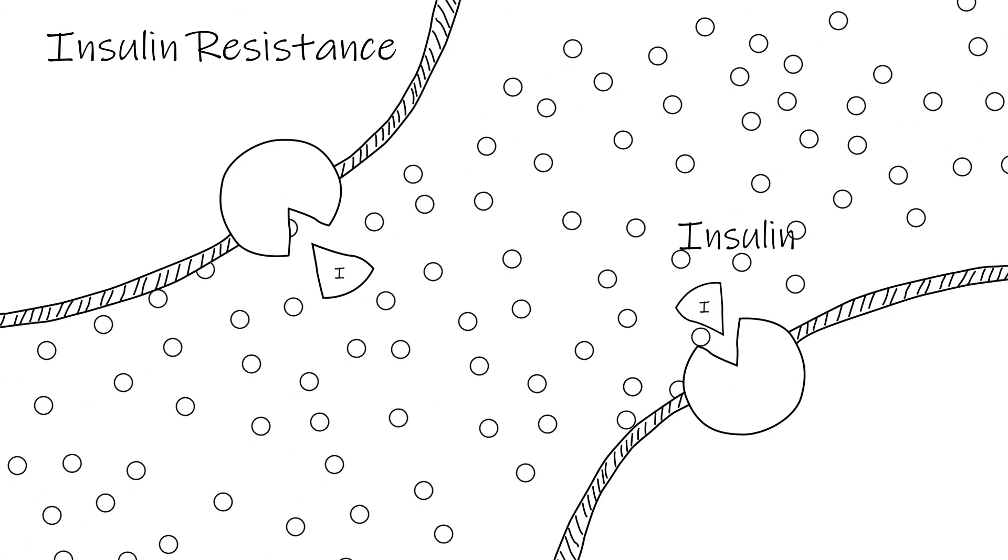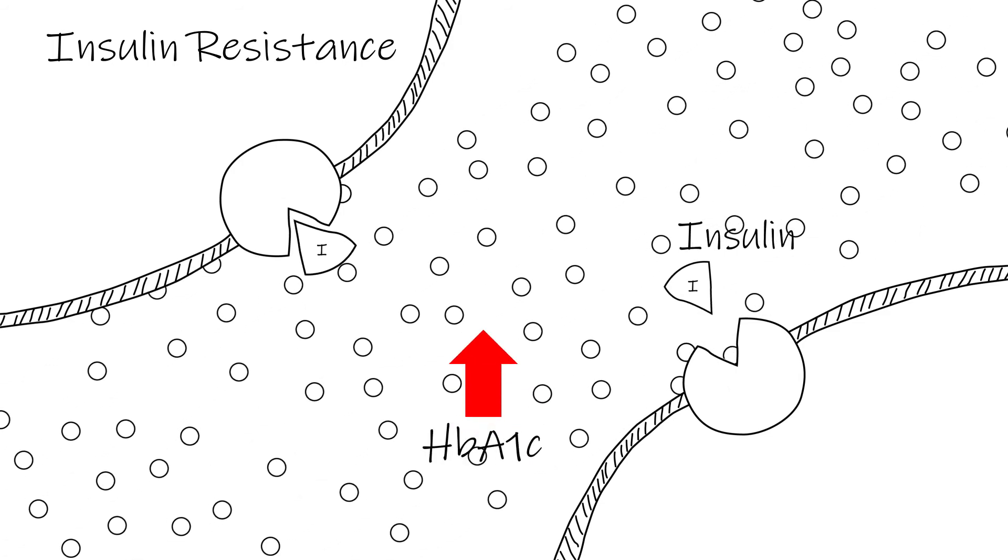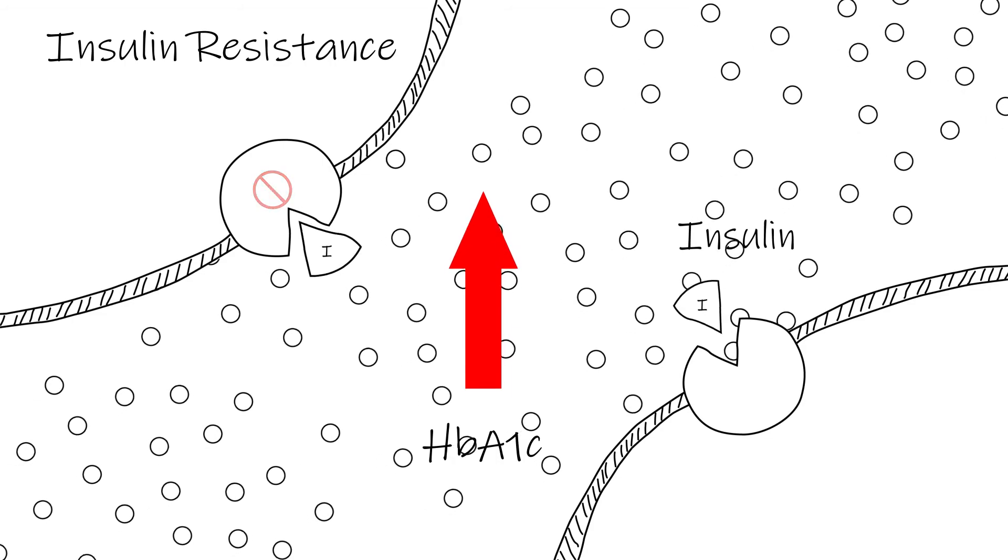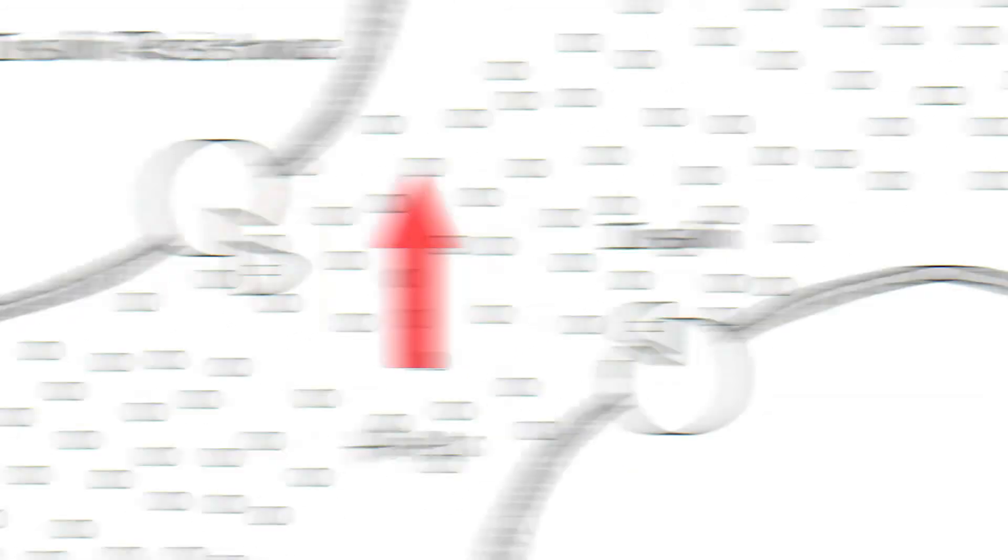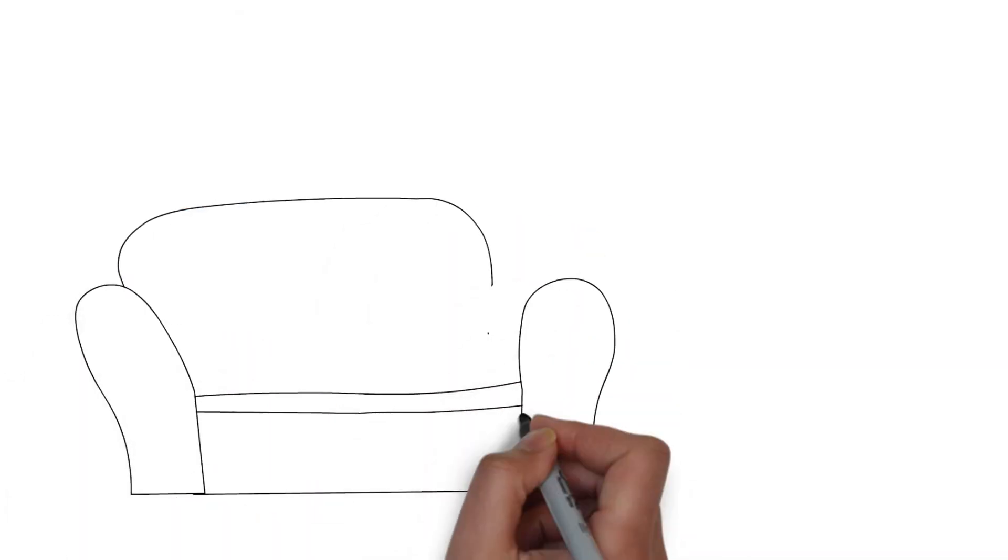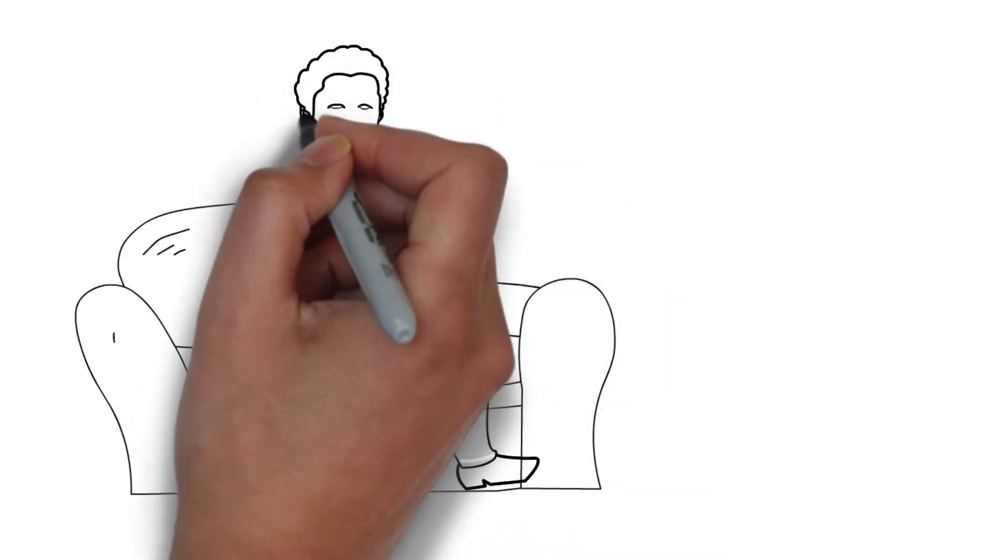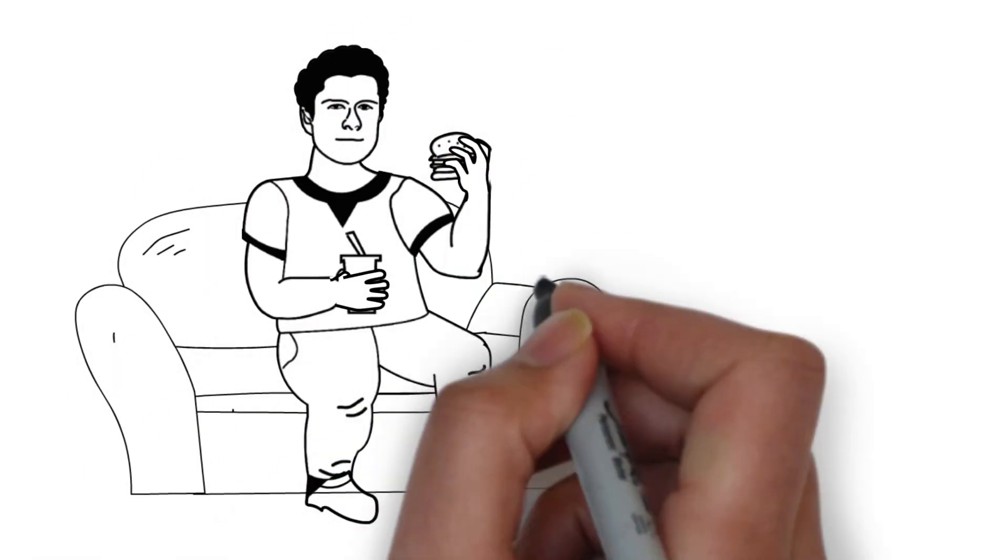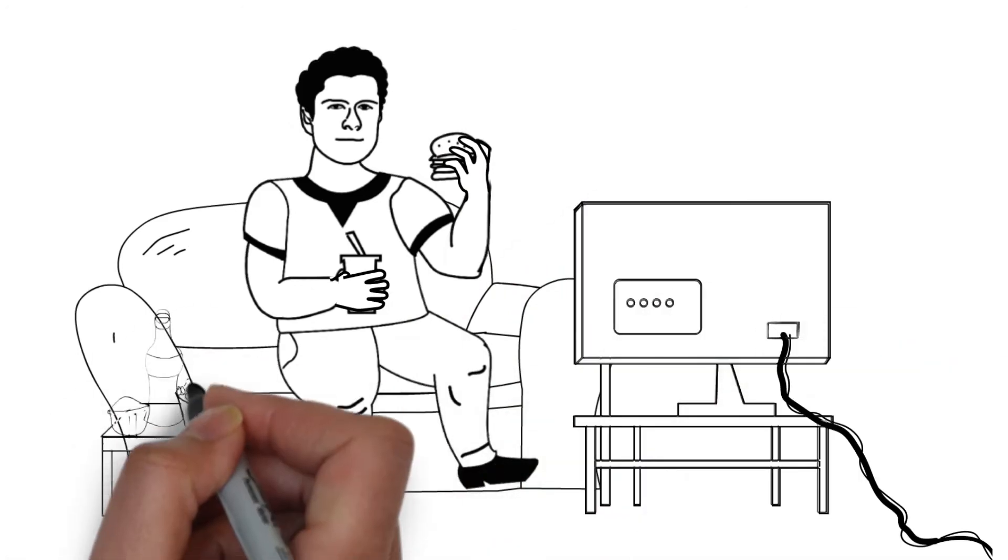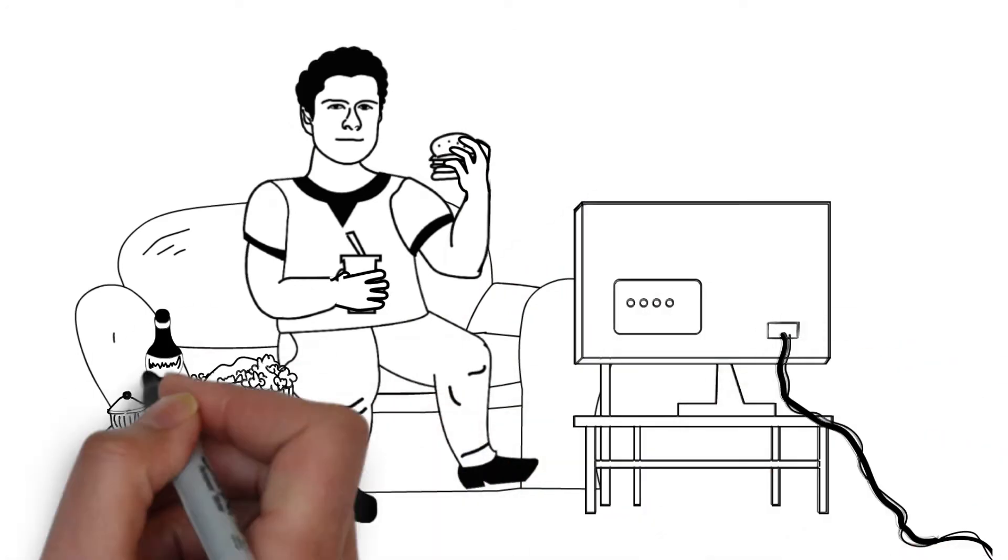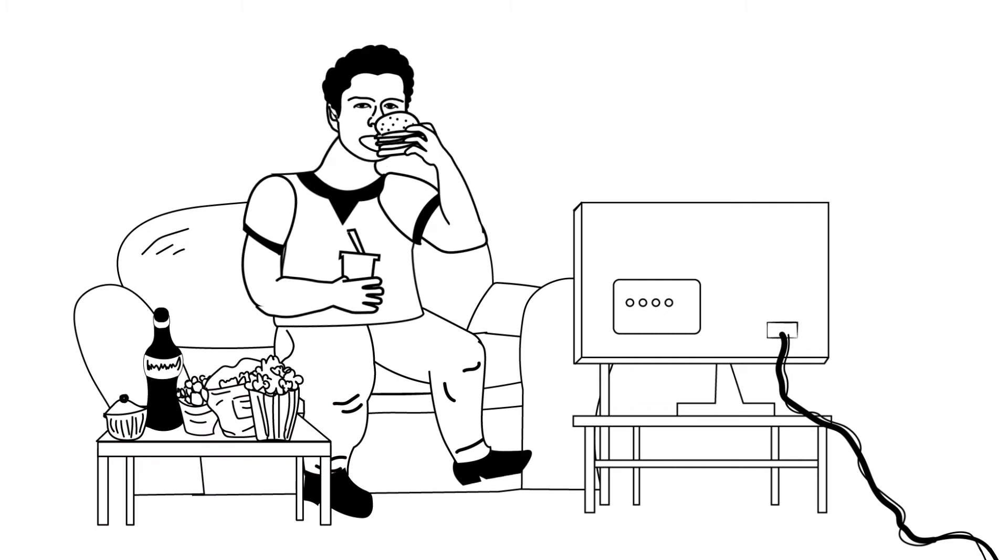This increases an individual's HbA1c score, a measure of long-term high blood glucose. Insulin resistance and accumulating blood glucose requires much more insulin to be produced to stimulate the cells into producing more glucose transporters, allowing glucose to leave the bloodstream and enter cells.